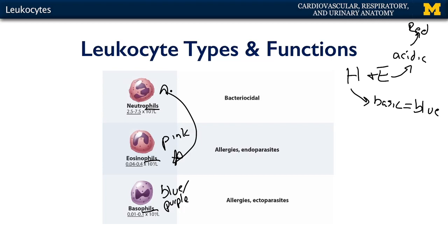Eosinophils are intermediate in terms of their ubiquity within the blood. Their specialty and their degranulation involve the release of substances such as histamine, and they are involved in allergic responses. More often than not, they are specialists in dealing with endoparasites, such as schistosomes.